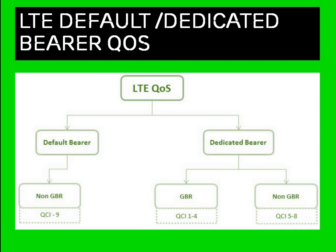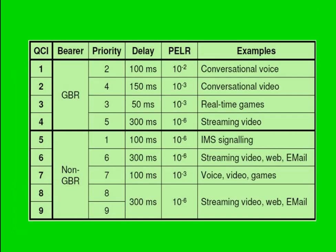As you can see in this diagram, QCI 1 to 4 are defined for GBR and QCI 5 to 9 for non-GBR, with priorities and delay budgets also specified. For example: QCI 1 is used for conversational voice, QCI 2 for conversational video, QCI 5 for IMS signaling which is very important, QCI 6 for streaming video and web browsing, and QCI 7 for gaming. The QCI will be allocated to you based on the service you are using.